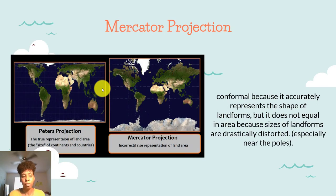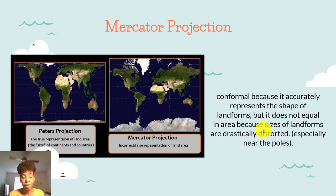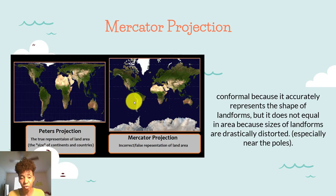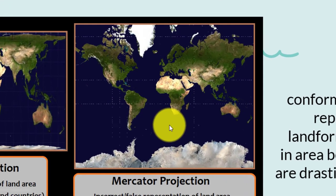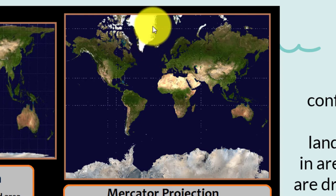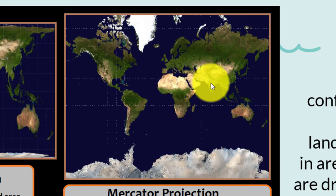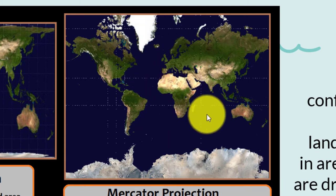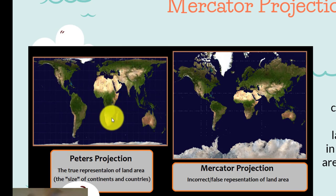The Mercator projection is conformal because it actually represents the shape of the land forms — this is how each land form's shape actually looks. However, the area and sizes are drastically distorted, especially at the poles. As you see here, Greenland looks enormous compared to Africa, which appears tiny in comparison. We know that's totally inaccurate — Africa is way bigger, as shown in the previous projection.